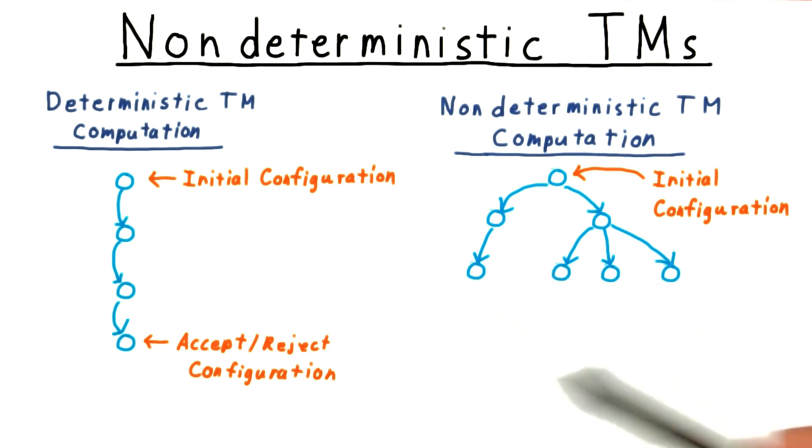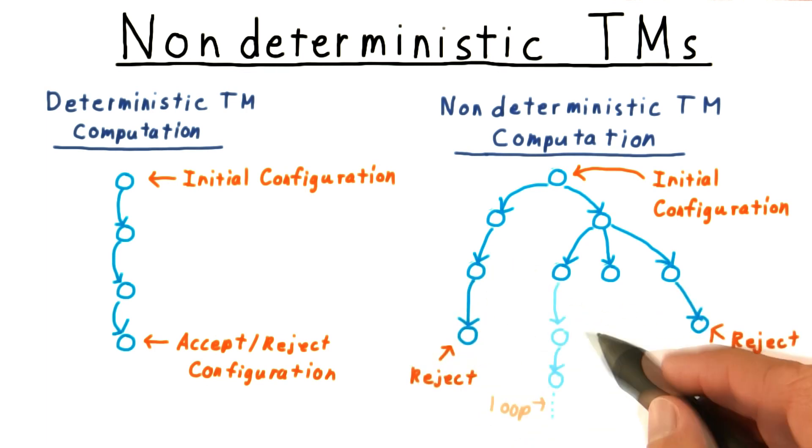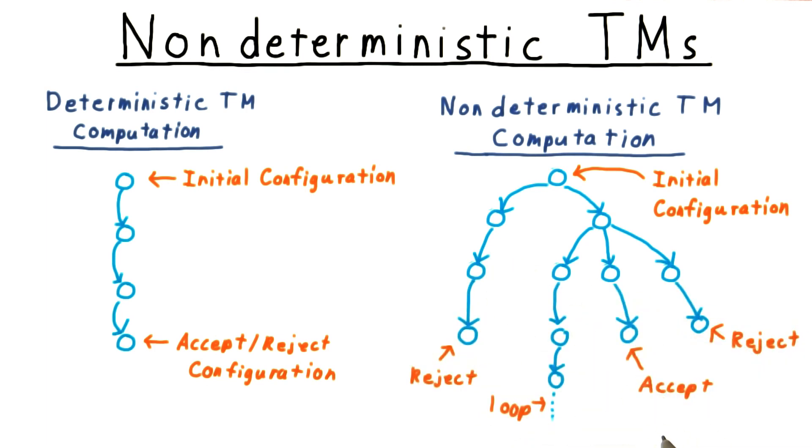For each branch, we have all the same possibilities as for a deterministic machine. The machine can reject, it can loop forever, or it can accept. If the machine ever accepts in any of these branches, then the whole machine accepts.